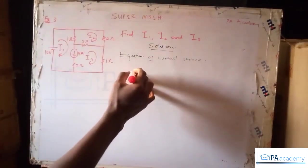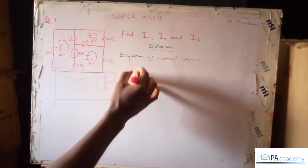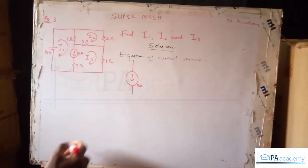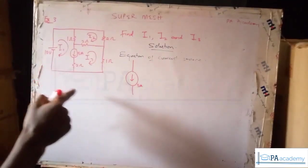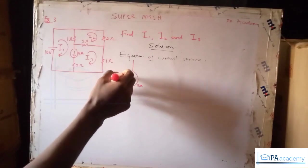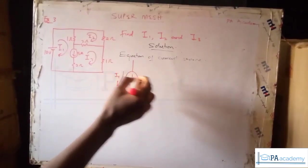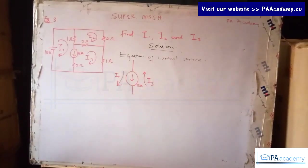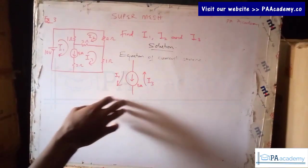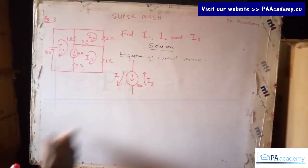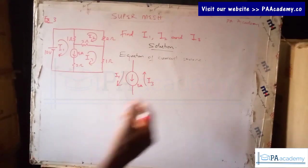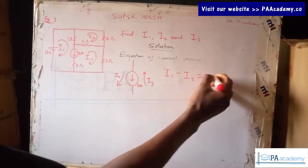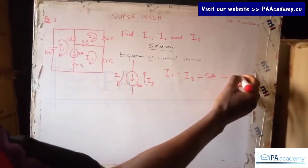Let me just draw that. We are given a current source of five amperes. There are two currents: in one direction we have i1, and in the opposite direction we have i3. When writing the equation of the current source, you look at the one in the same direction as the given current source, which is i1. So that gives us i1 minus i3 equals five amperes, and this is equation one.